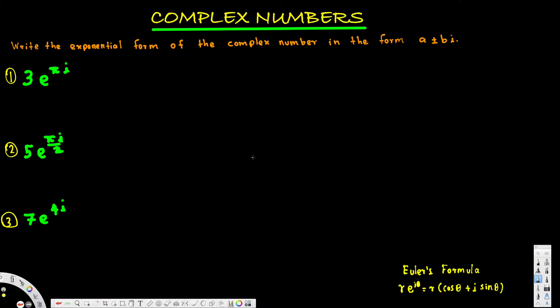In this video we are going to see how to convert a complex number from polar exponential form to rectangular form. Here we have three complex numbers given in polar exponential form. We are going to use Euler's formula to convert them.